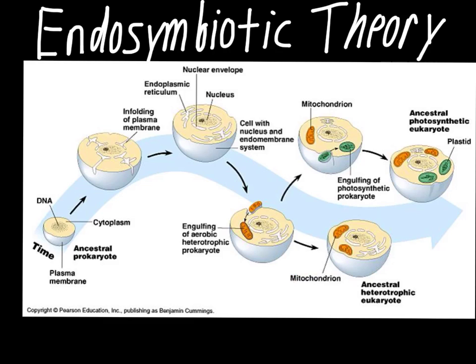So those pieces of evidence all point to the idea that the mitochondria was actually a food particle absorbed by a larger cell — or at least it was going to be used as food. It turns out the cell couldn't break it down, so it was much better to keep it and live symbiotically with it. This is mutualism — both get a benefit: the larger cell gets ATP, and the smaller cell gets protection.